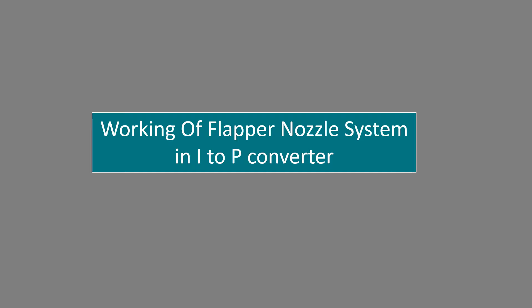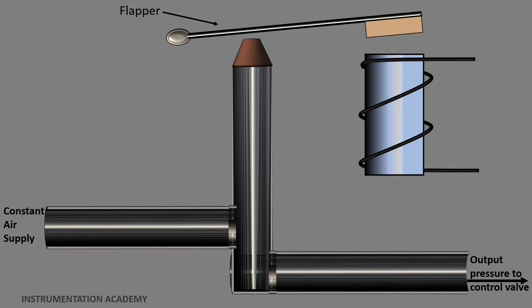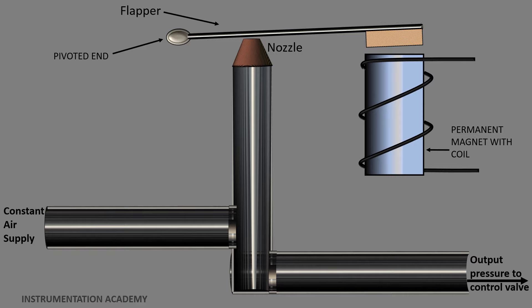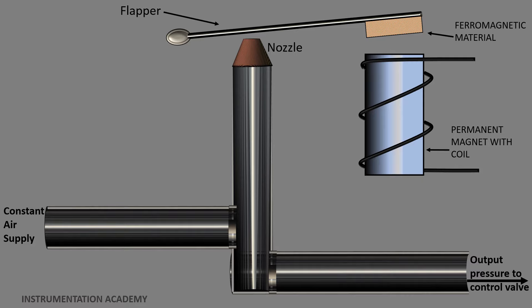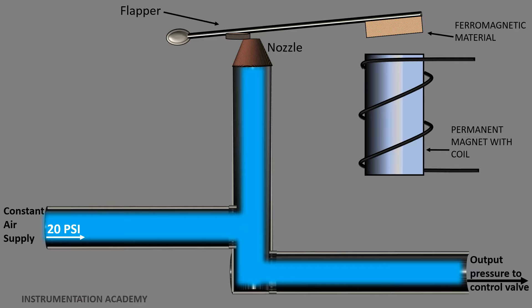Now let's see the working of a nozzle flapper system. The main elements of this arrangement are flapper, nozzle, and a permanent magnet with a coil wound around it. The flapper is pivoted at one end and free at the other end so that it has some degree of flexibility to move up and down. A ferromagnetic material is attached to the free end of the flapper. A nozzle is present near the flapper. There is some gap between the nozzle and the flapper. Air flows through the nozzle. A standard supply of about 20 psi is maintained as supply pressure.